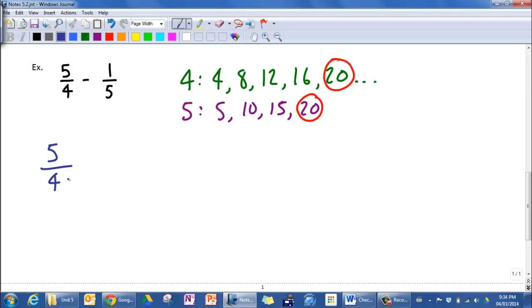So five-fourths, you want that to be something divided by twenty. If I multiply four by five, that turns into twenty. So I'm going to do the same thing to the top, and I get twenty-five over twenty.